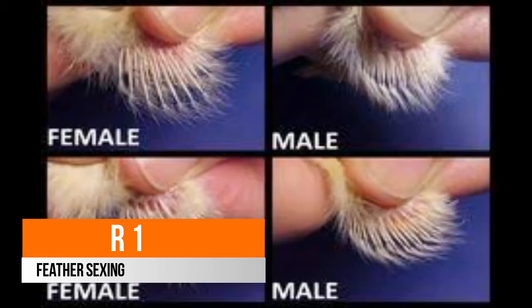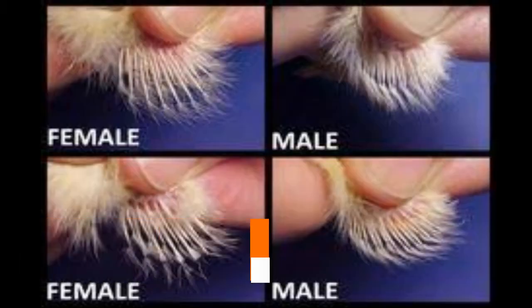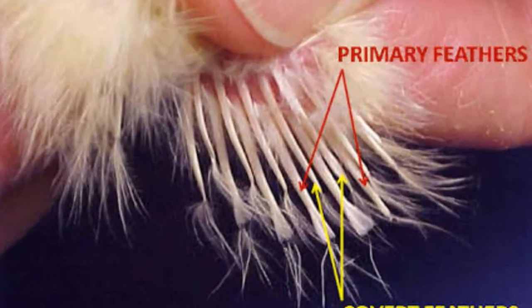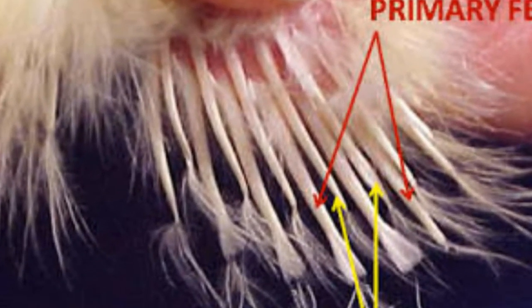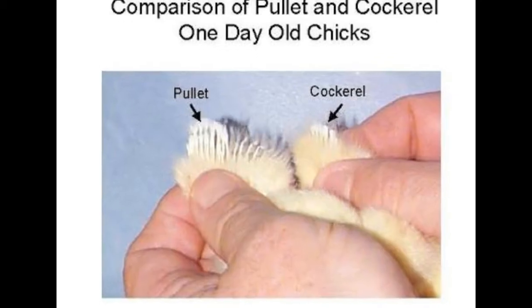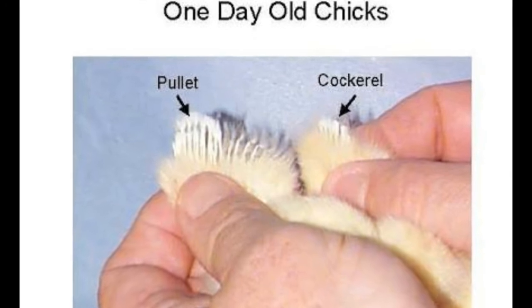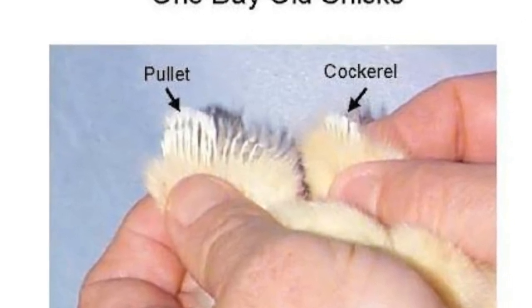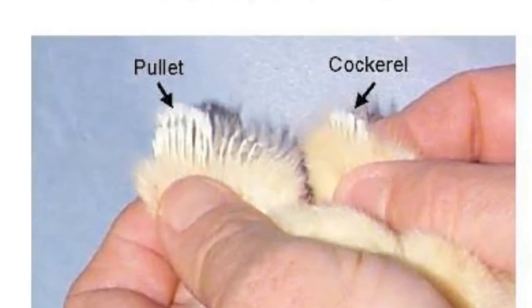Feather sexing is the most widely used technique to determine the gender of the chick. This technique is only applicable after hatching within two or three days. If there is rapid feather growth then it is female. If there is slow feathering then it is male. Females often tend to develop feathers faster than males.